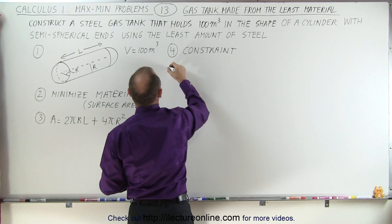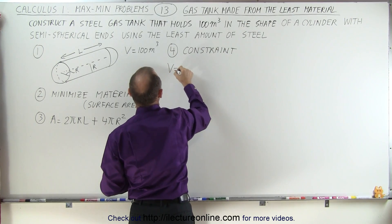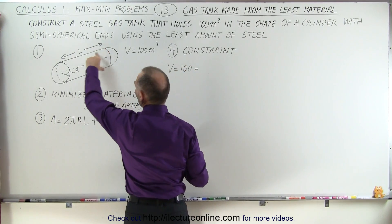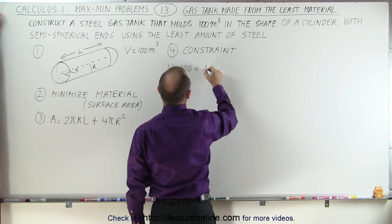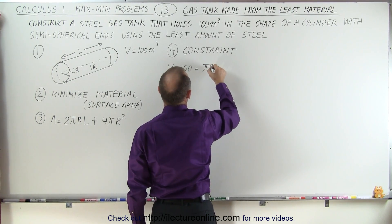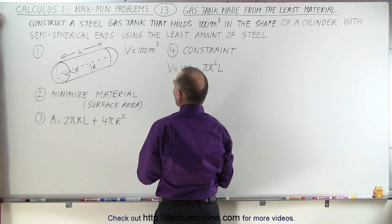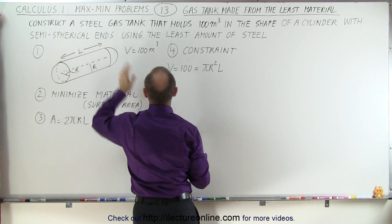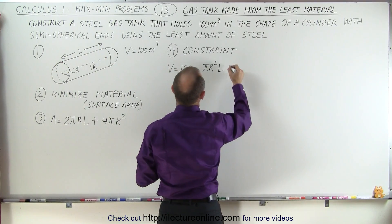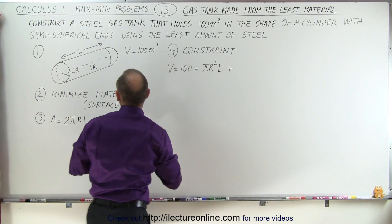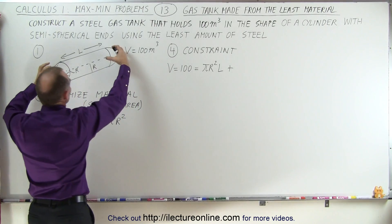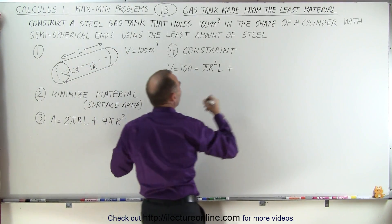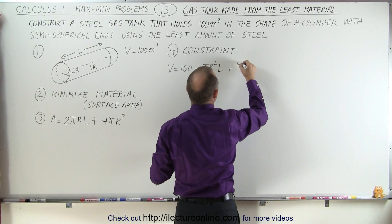The constraint tells us that the volume, which equals 100 cubic meters, is equal to the volume of the cylindrical part — which is πr²l, the cross-section times the length — plus the volume of the two semispheres, which together form a complete sphere. So that would be (4/3)πr³.